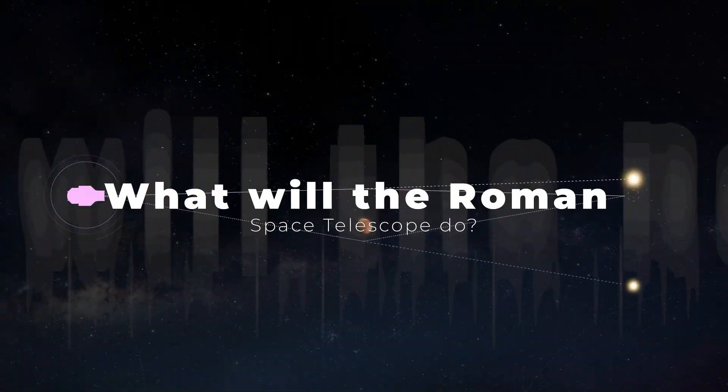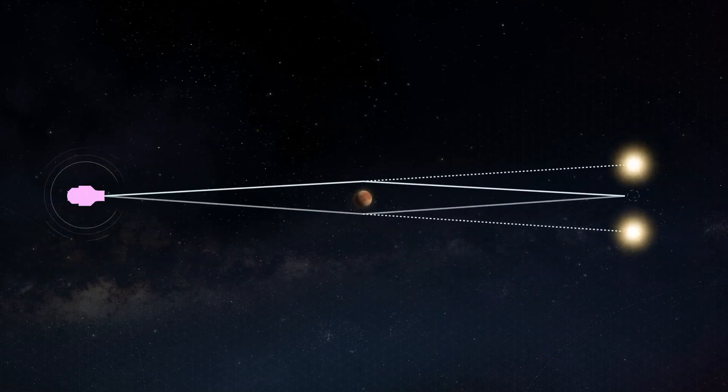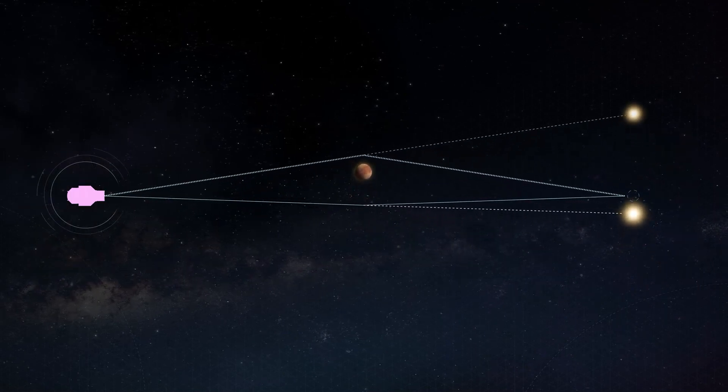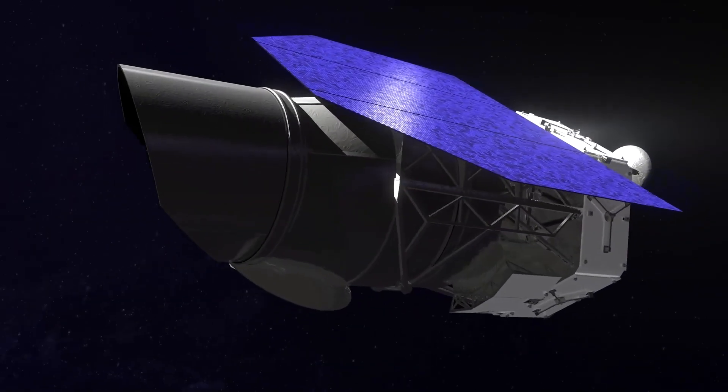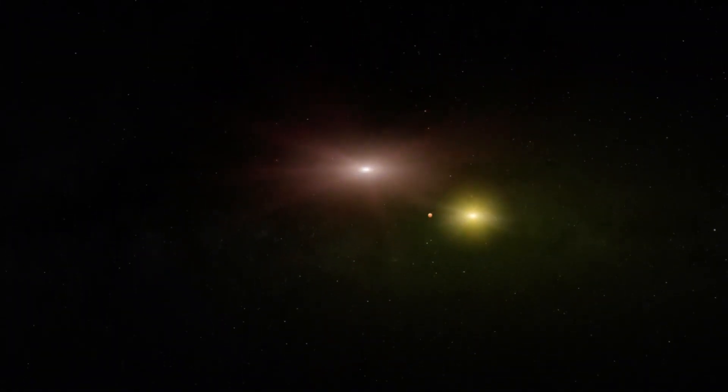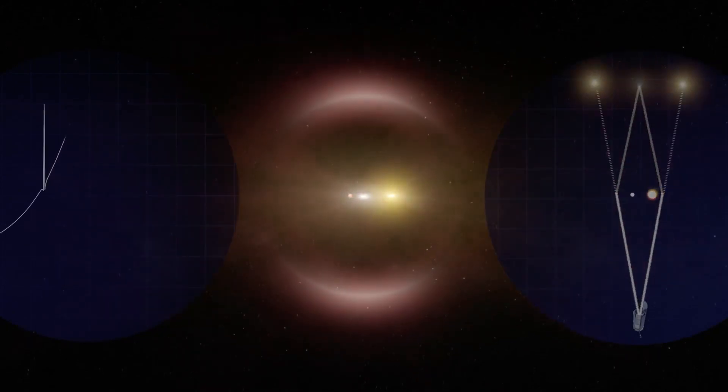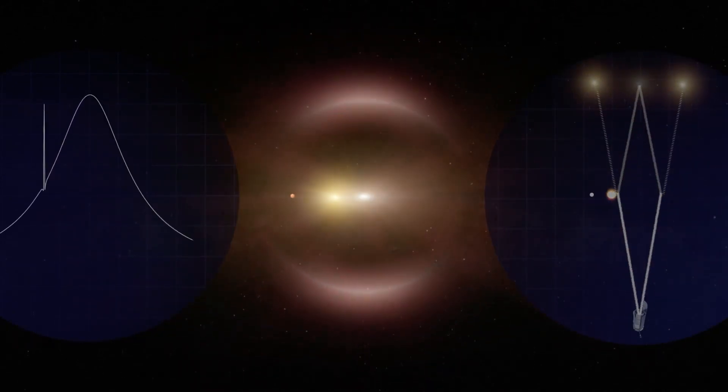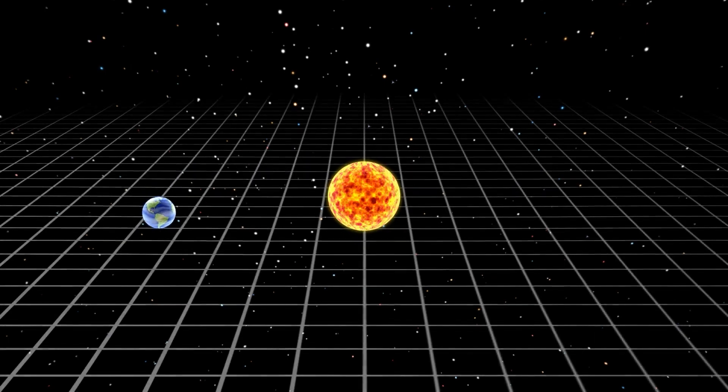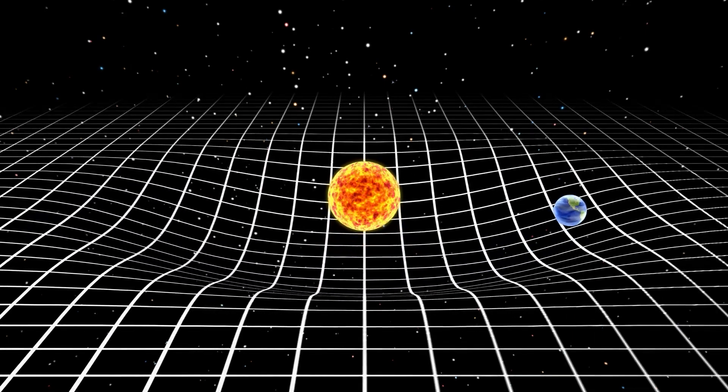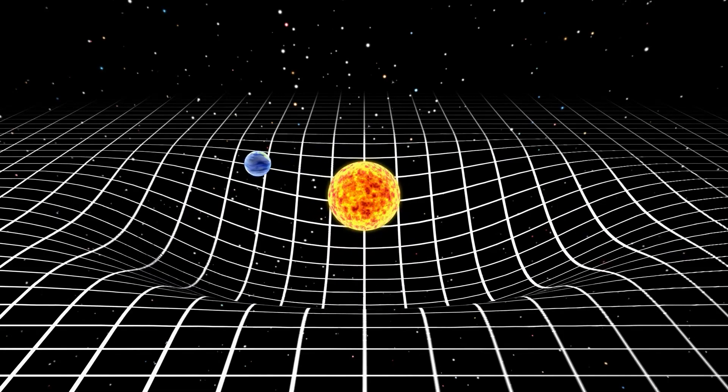It will do so using an incredible technique called gravitational microlensing. Microlensing is what makes Roman so unique and special. It is due to this feature that astronomers will be able to find new types of exoplanets thousands of light-years from Earth, orbiting stars near the center of the Milky Way. The concept is inspired by Albert Einstein's theory of general relativity and was proven during a total solar eclipse in 1919.